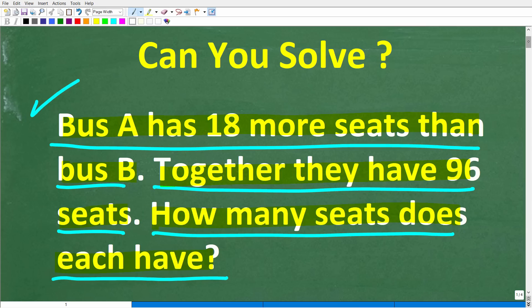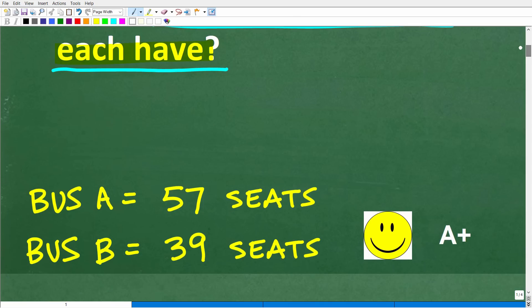All right, so let's take a look at the answer. The correct answer is the following: Bus A has 57 seats and Bus B has 39 seats. Now, if you got this right, you definitely get a happy face and an A plus.